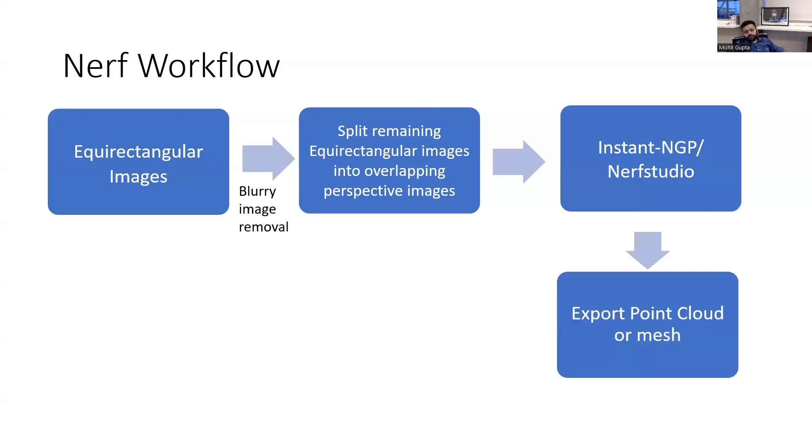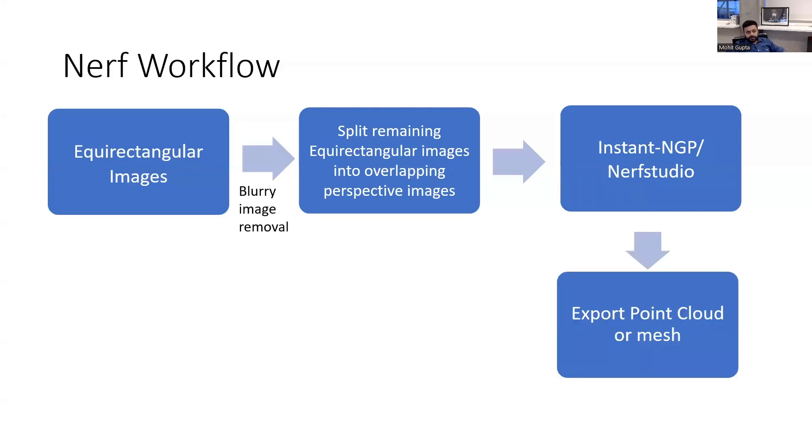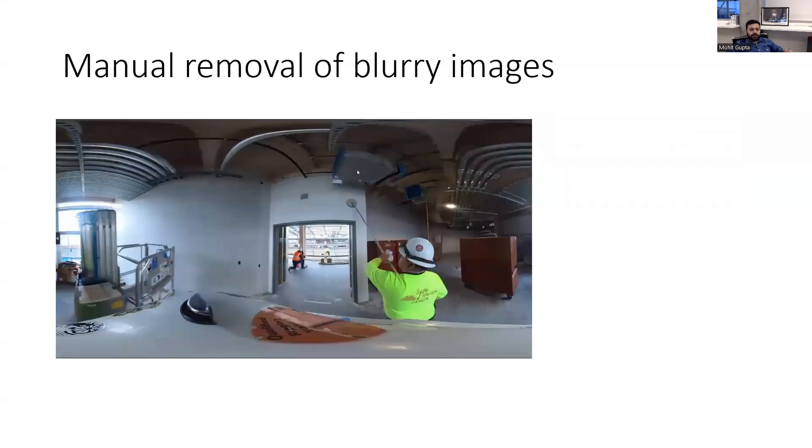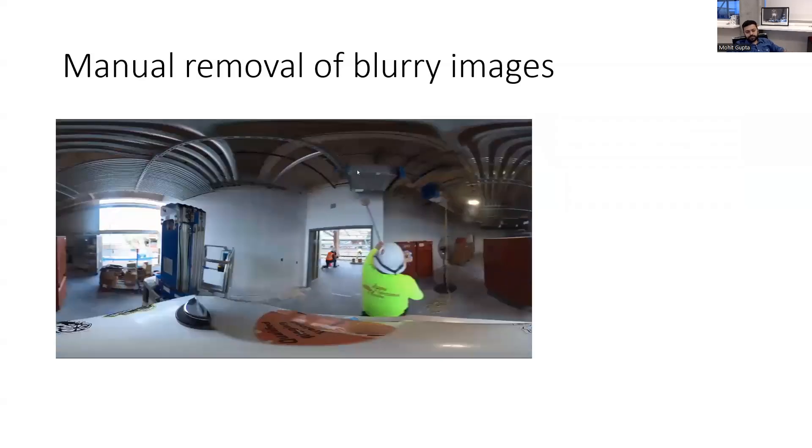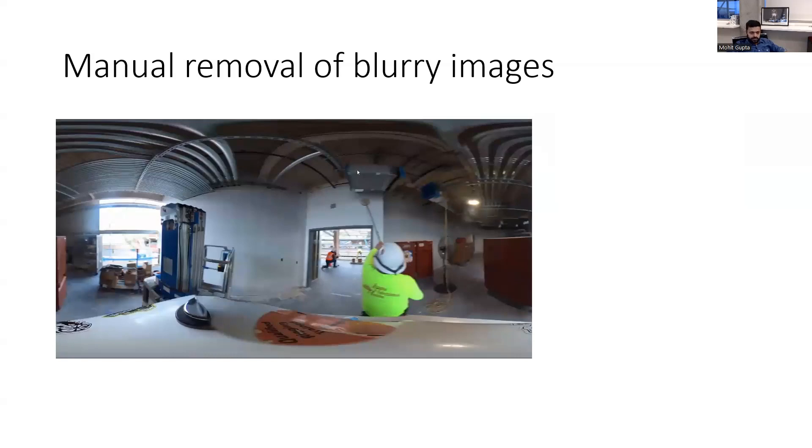And then you can export point cloud or mesh if you want. So in this case, it's an example that I have some images, a folder which has a lot of images. What I'll do is I would manually go through them and remove blurry images. For example, you can see this one is clear, this one is blurry, and then I would just remove the blurry one.